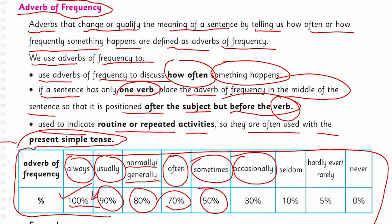Occasionally کا مطلب ہے جب کوئی خاص موقع ہو — جیسے عید، شادی، meeting یا interview — تو یہ ساری چیزیں occasionally ہوتی ہیں، جن کے صرف 30% chances ہوتے ہیں۔ Seldom کے بھی بہت کم chances ہوتے ہیں۔